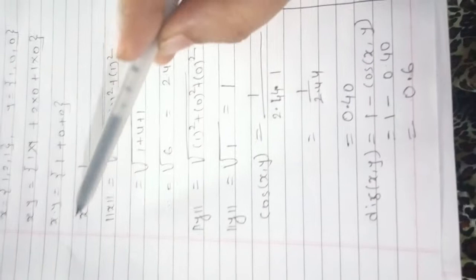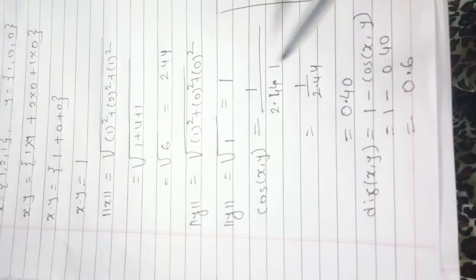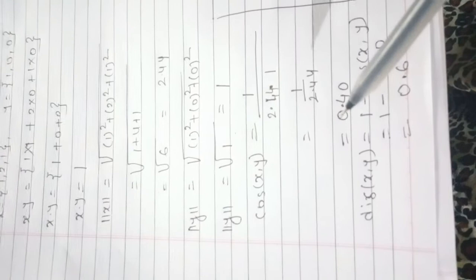Cos(x, y) is equal to x dot y is 1, mod x is 2.44, mod y is 1. So we will get here 1 divided by 2.44, and that is 0.40.